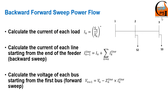Let's get started. Imagine that this is my distribution system — it is basically a part of a feeder with three buses, two loads, and my first bus is the slack bus. To do the backward-forward sweep power flow, we need to first calculate the current of each load. We do so by calculating the conjugate of S divided by the voltage of that bus. After that we need to calculate the current of each line.